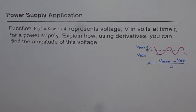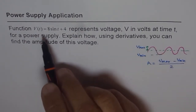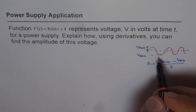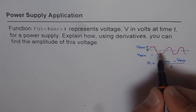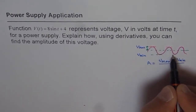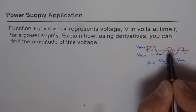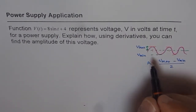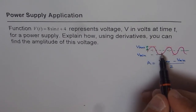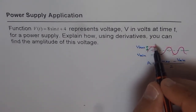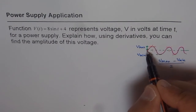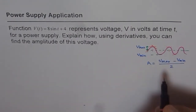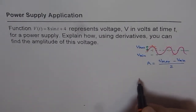Using derivatives, how can you find maximum and minimum? If you find the derivative of the function and equate it to zero, you find points where there is a horizontal tangent. At these points, V'(t) = 0. If V'(t) is changing from increasing to decreasing, we have a maximum.